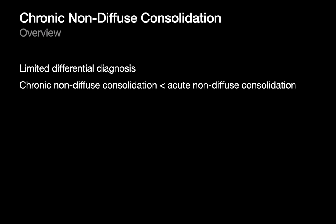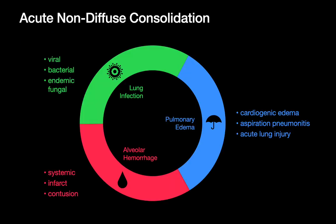The differential diagnosis for chronic non-diffuse consolidation is fortunately pretty limited, and these entities tend to occur less often than acute non-diffuse consolidation. The differential diagnosis for acute non-diffuse consolidation is a good place to start — are there things we can borrow from it for our chronic non-diffuse consolidation differential?